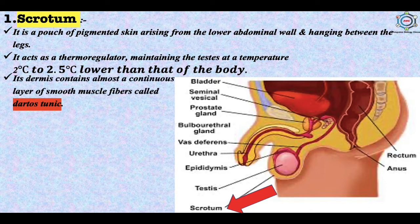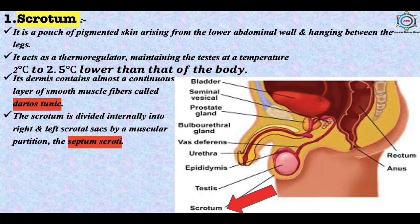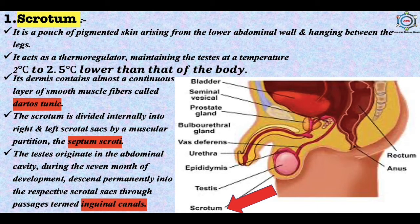The dermis of the scrotum contains a continuous layer of smooth muscle fiber called the dartos tunic. The scrotum is divided internally into right and left scrotal sacs by a muscular partition called the septum scrotum. The testes originate in the abdominal cavity during the 7th month of development and descend permanently into the scrotal sacs through passages known as inguinal canals. Men wearing tight underpants or taking very hot baths may have a reduced sperm count, almost leading to infertility.